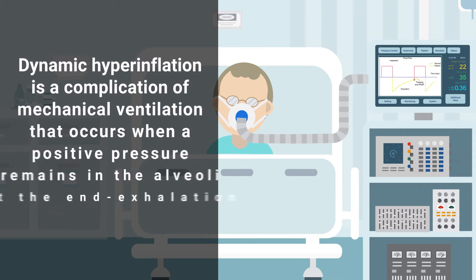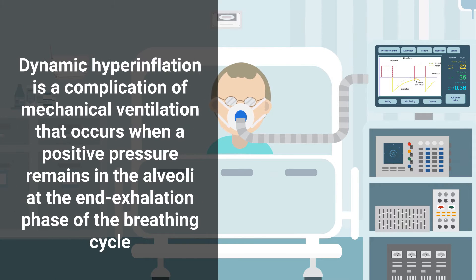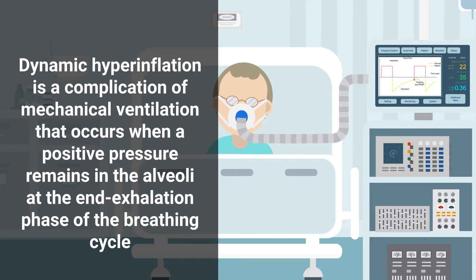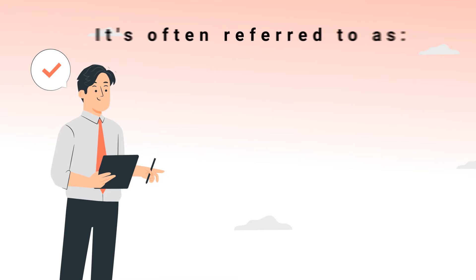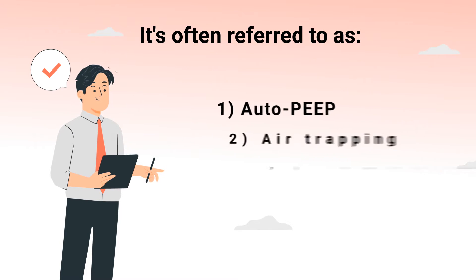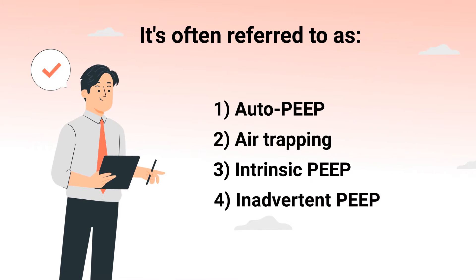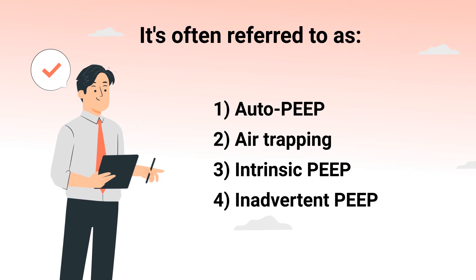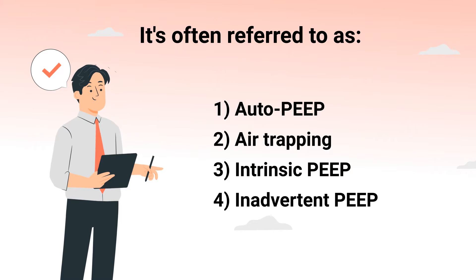Dynamic hyperinflation is a complication of mechanical ventilation that occurs when positive pressure remains in the alveoli at the end exhalation phase of the breathing cycle. It is often referred to as auto-PEEP, air trapping, intrinsic PEEP, and inadvertent PEEP.